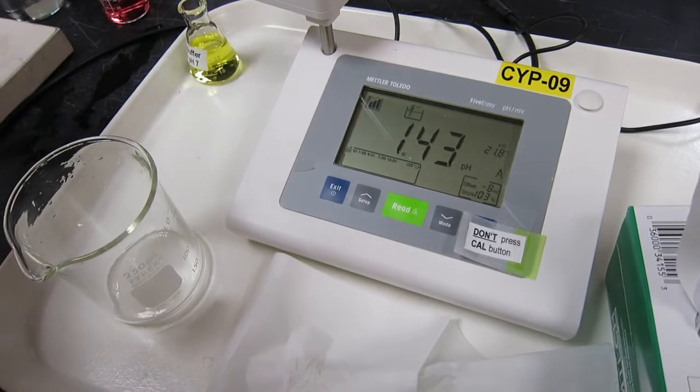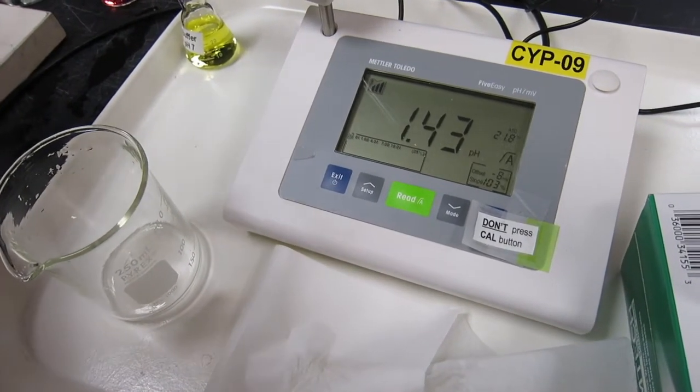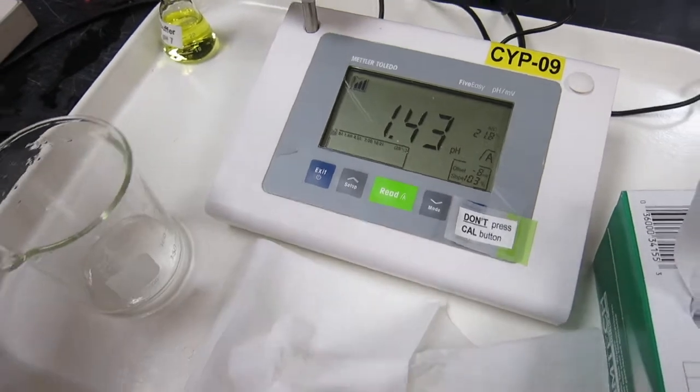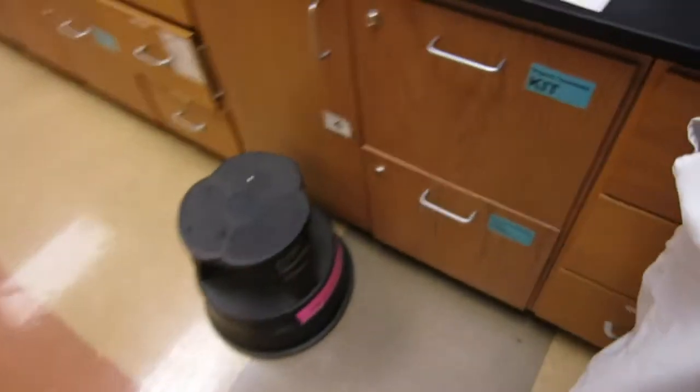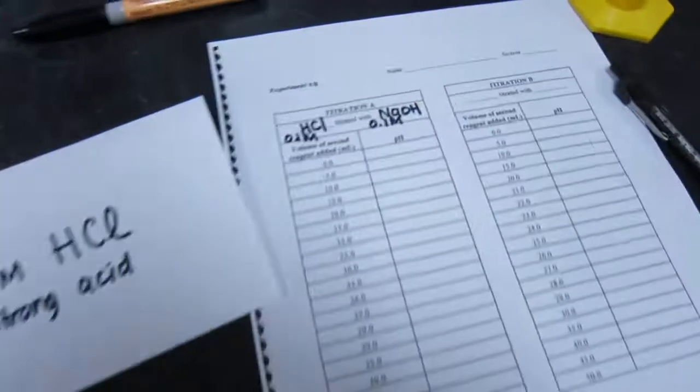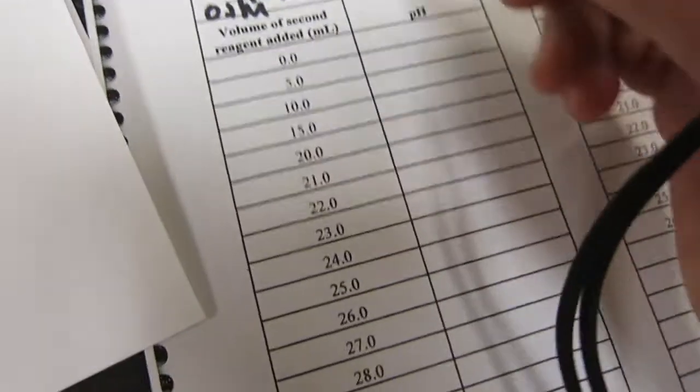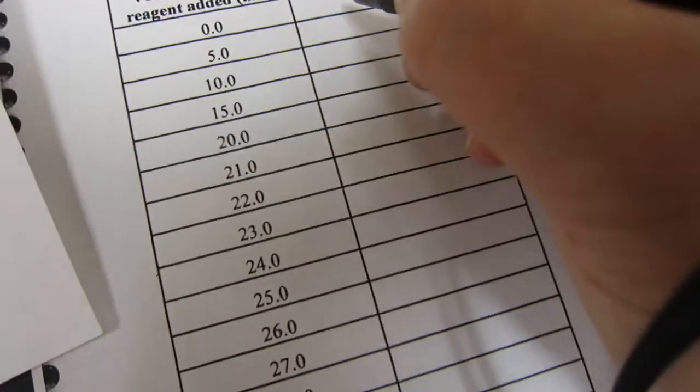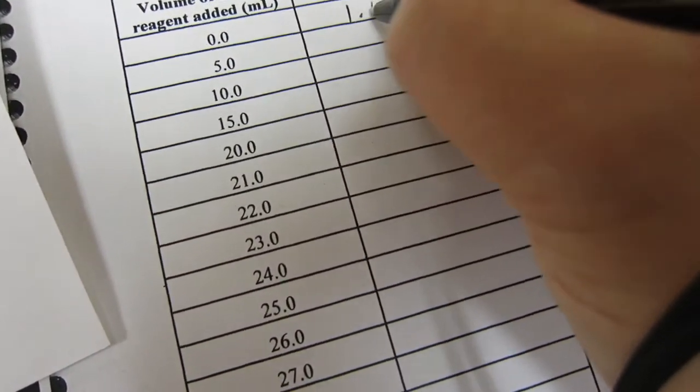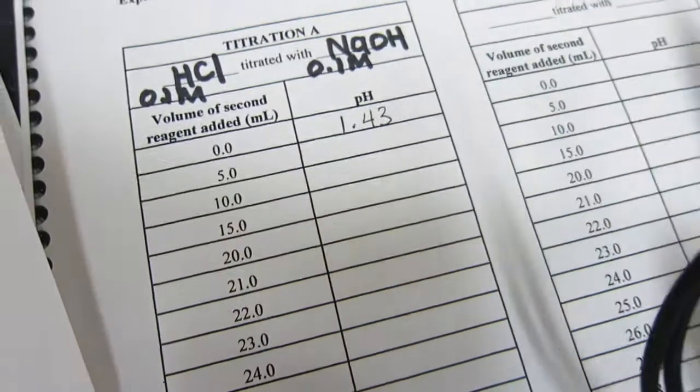I press it back to auto. There you go, it's 1.43. Back to your form, we fill in, so this is 0, and then we put 1.43 here. There you go.